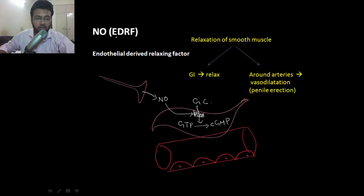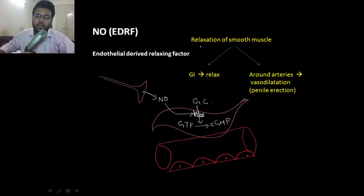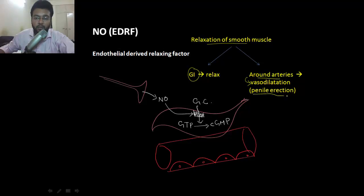Now let's talk about the cyclic GMP pathway. Nitric oxide, also called endothelial-derived relaxing factor, is derived from nerve endings or from endothelial cells. Its main function is relaxation of smooth muscle — be it of the GI tract or around the arteries — resulting in vasodilation, which is very important in penile erection. Nitric oxide is released by nerve endings and taken up by the penile smooth muscle.